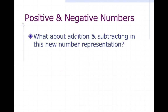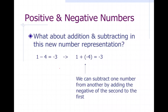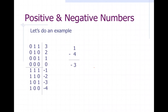What about addition and subtraction in this new number system? If I'm doing one minus four, that's negative three. We can get this by simply saying: let's just do addition, so it's one plus negative four equals negative three. Basically, subtraction can be represented as adding a negative number. So one minus four in our new number system — let's set this up as one plus negative four instead of one minus four.